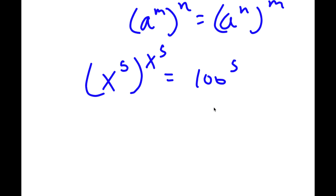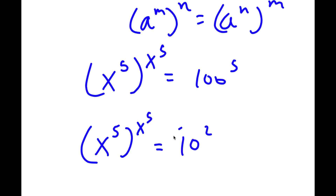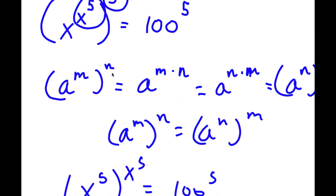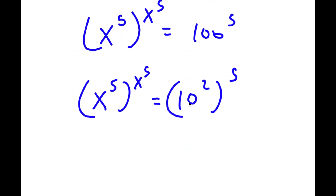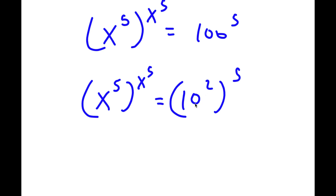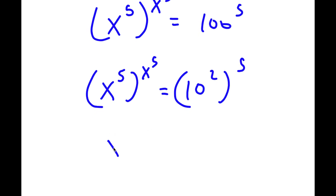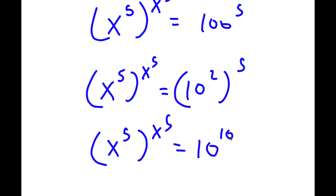Now, 100 is the same thing as 10 to the power of 2. So now I have x to the power of 5 to the power of x to the power of 5 is equal to 10 to the power of 2 to the power of 5. Using the rule a to the power of m to the power of n equals a to the power of m times n, 10 to the power of 2 to the power of 5 becomes 10 to the power of 10. So I have x to the power of 5 to the power of x to the power of 5 is equal to 10 to the power of 10.